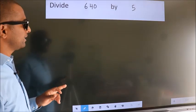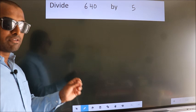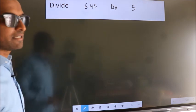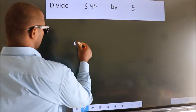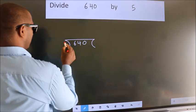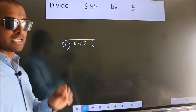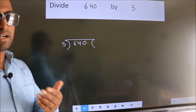Divide 640 by 5. To do this division, we should frame it in this way. 640 here, 5 here. This is your step 1.